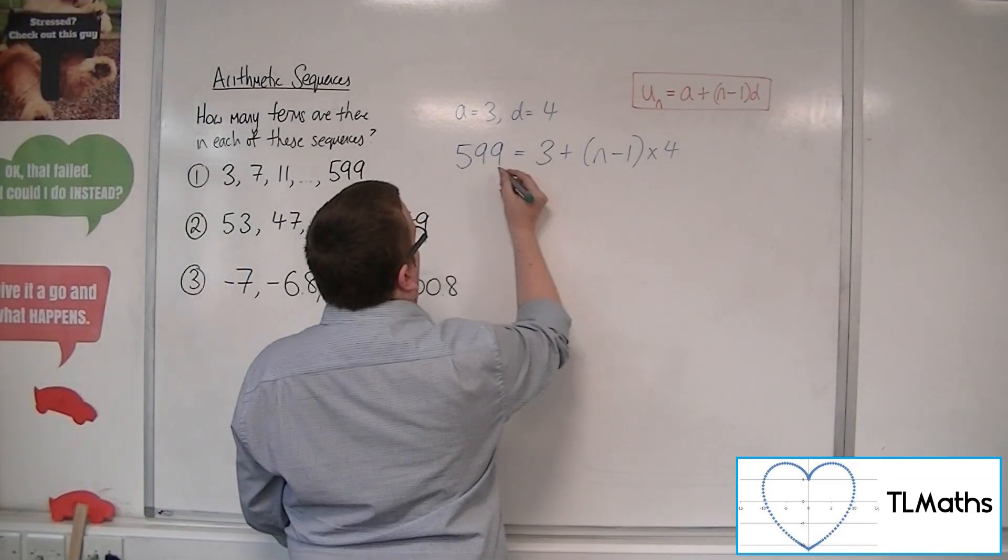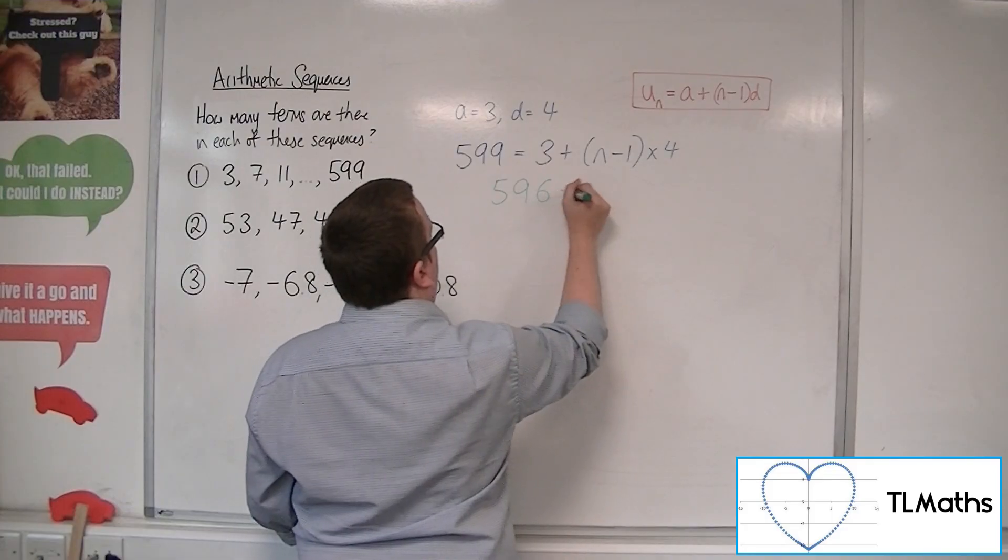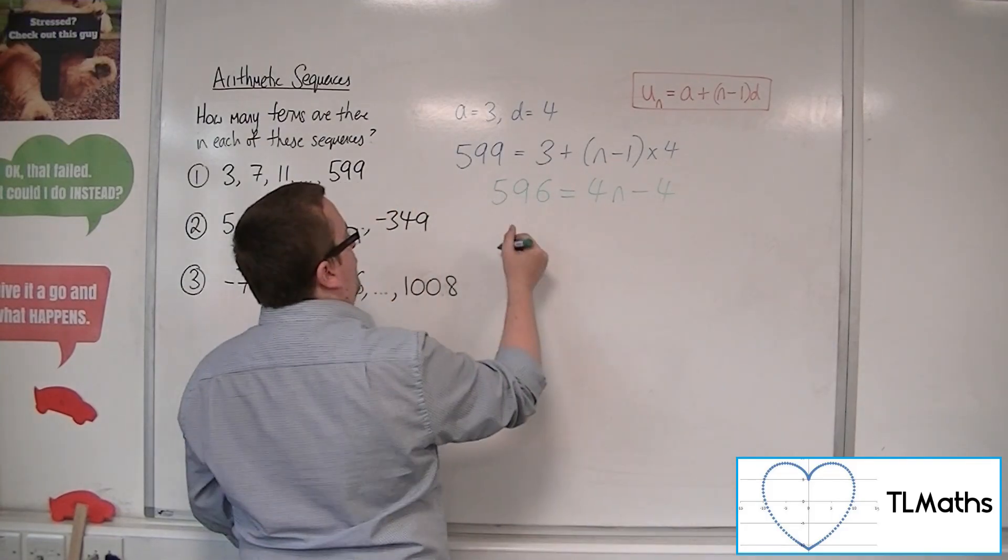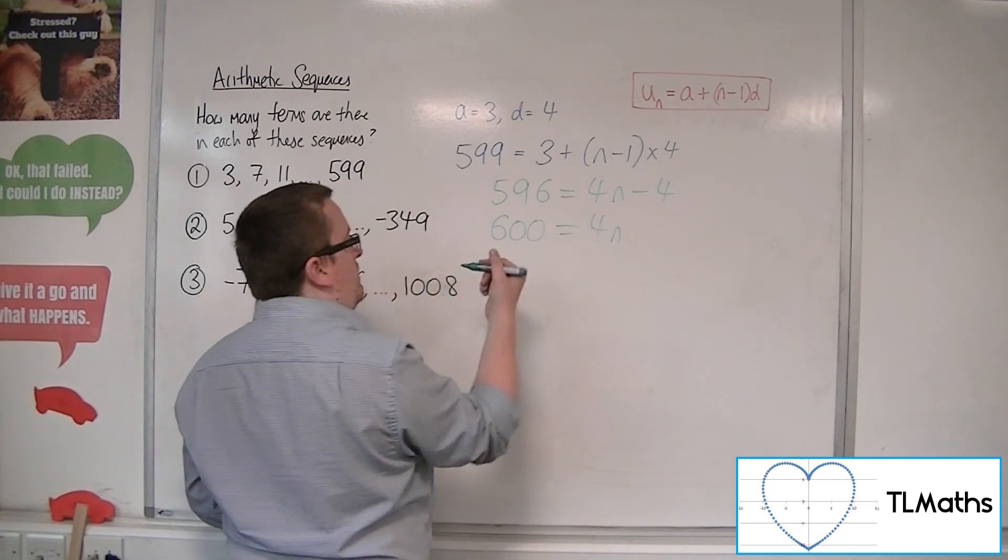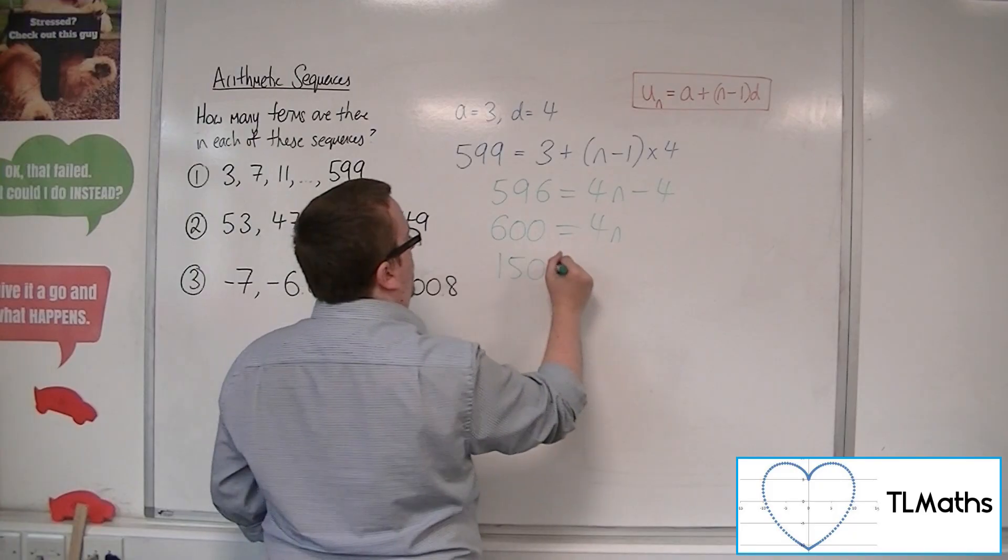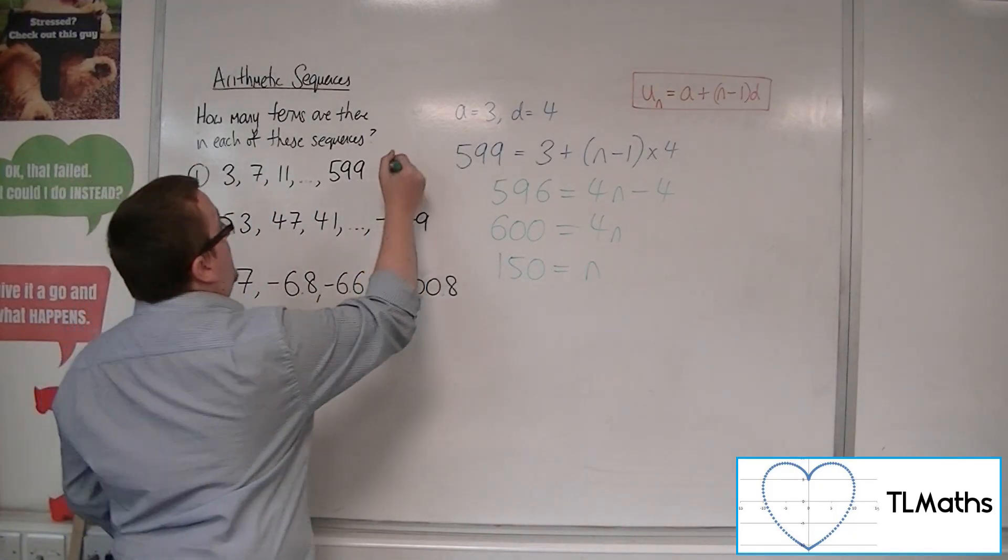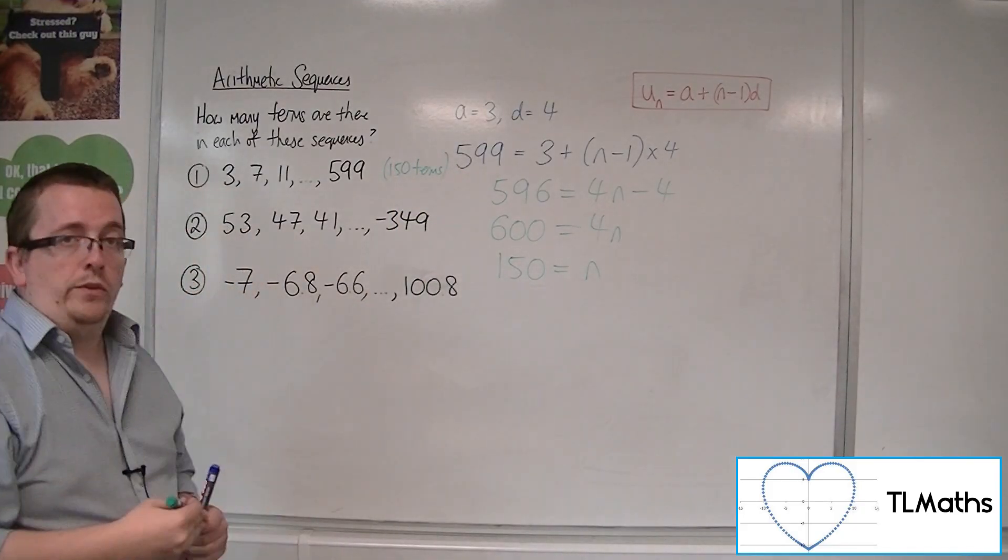So if I multiply that out or simplify it, take the 3 from both sides, so I have 596. So I've got 4n minus 4. Add the 4 to both sides, so that's 600 is 4n. And then divide both sides by 4, and so n must be 150. So there must be 150 terms in that sequence.